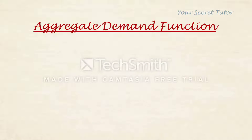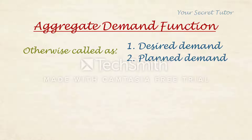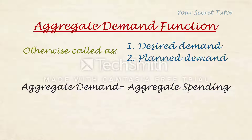Aggregate demand can be expressed using alternative words. You can say Desired Demand — Desired Demand is Aggregate Demand. You can say Planned Demand — Planned Demand is also Aggregate Demand. One thing you can also say is that Aggregate Demand is Aggregate Spending.